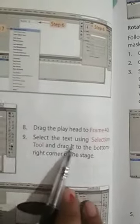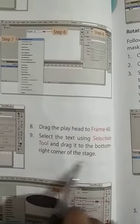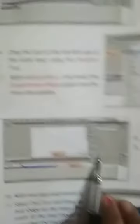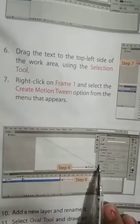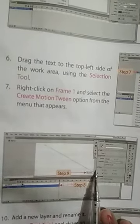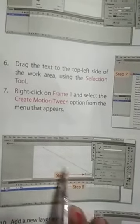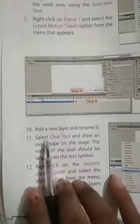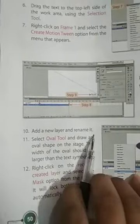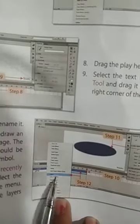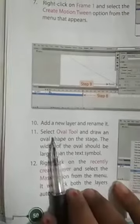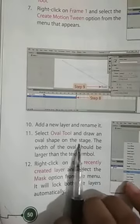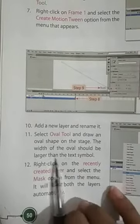Select the text using the selection tool and drag it to the bottom right corner of the stage. Next, add a new layer and rename it. This is the tenth step — what do we need to do in the new layer? We need to rename the layer.